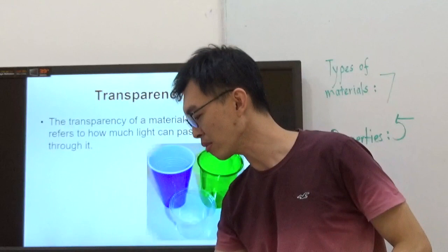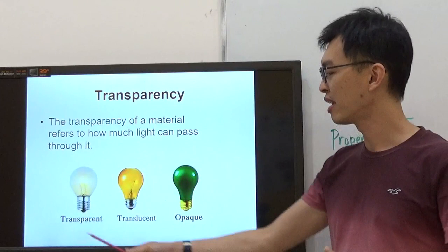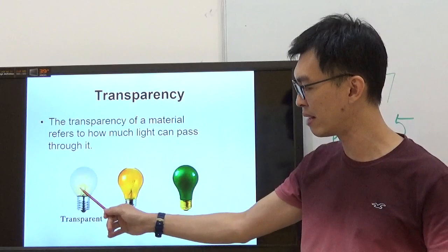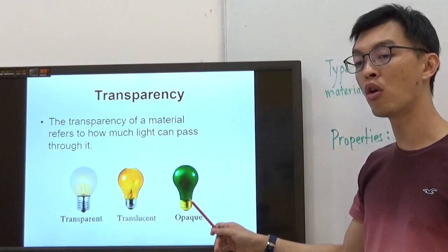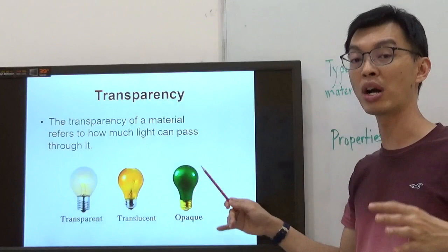If we talk about bulbs, this bulb is transparent, you could see the filament inside. This one is a translucent bulb. This is an opaque bulb, which does not allow light to pass through, meaning you can't see what is on the inside.